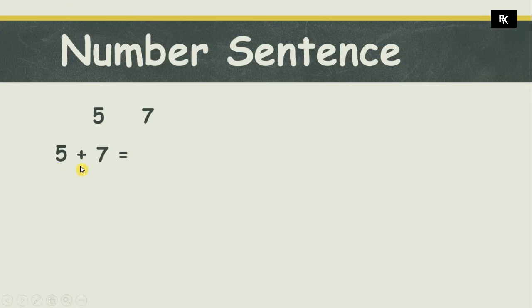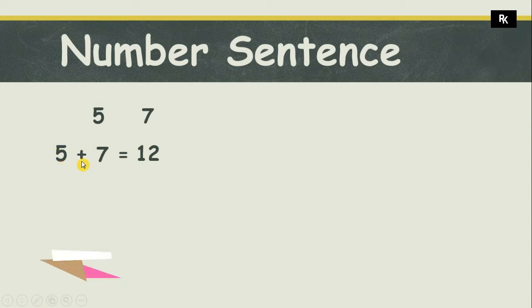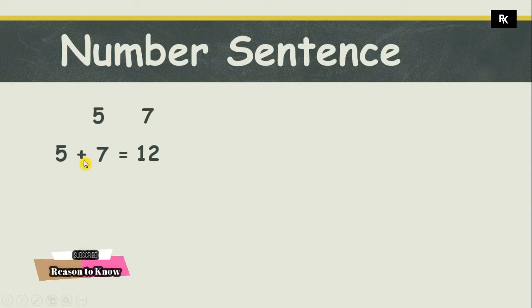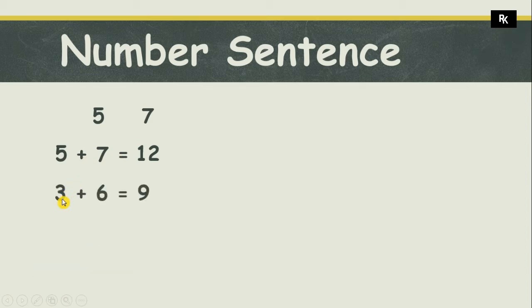Can you tell me what is five plus seven? Yes, five plus seven is equal to twelve. Here this is the complete number sentence. In a number sentence there will be two numbers, an addition sign, a symbol of equal, and the total of these two numbers.